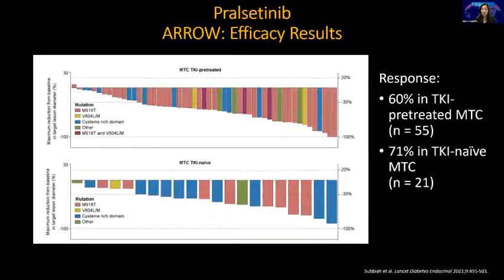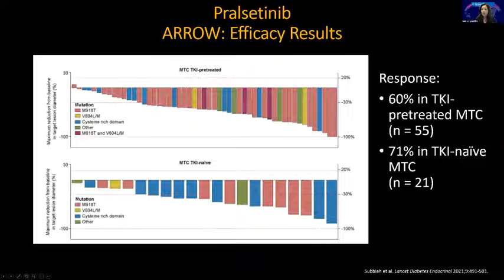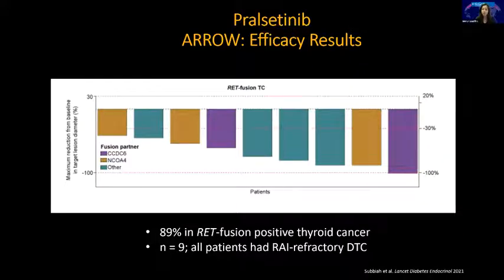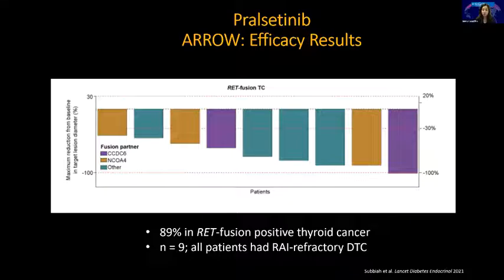Pralsetinib was the second drug approved, not long after. These were smaller trials with fewer patients but basically very similar response rates: 60% in TKI-exposed patients, 71% in TKI-naive MTC. For RET fusion thyroid cancer, 89% response rate — mostly differentiated thyroid cancers in that cohort. Both drugs are excellent for both RET mutation and RET fusion thyroid cancers.